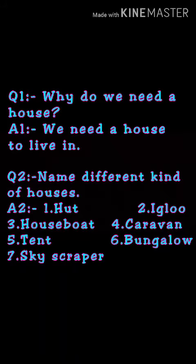Question number 2: Name different kinds of houses. The answer will be: hut, igloo, houseboat, caravans, tent, bungalow, skyscraper. These are the different kinds of houses.